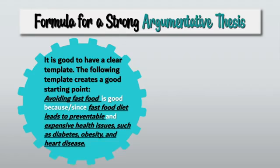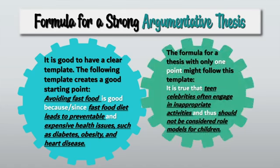So the formula for a strong argumentative thesis — it is good to have a clear template. The following template creates a good starting point. For example: avoiding fast food is good because — or since — a fast food diet leads to preventable and expensive health issues such as diabetes, obesity, and heart disease. Or the formula for a thesis with only one point might follow this template: it is true that teen celebrities often engage in inappropriate activities and thus should not be considered role models for children. These are two examples you can use as a template.